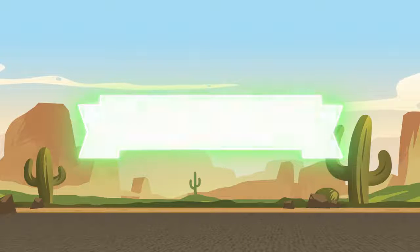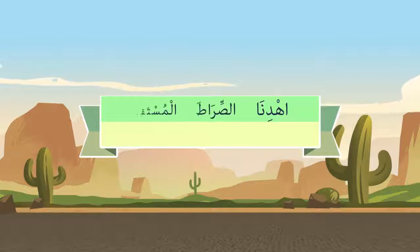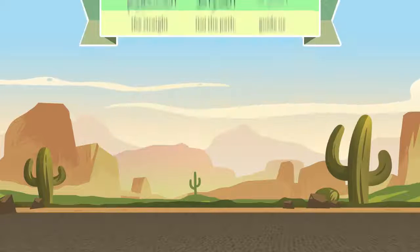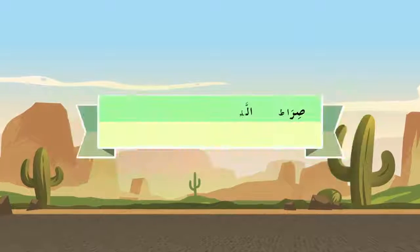أعوذ بالله من الشيطان الرجيم — إهدنا الصراط المستقيم — 'Guide us to the straight path.' That was in the last lesson. In this lesson, we will continue.